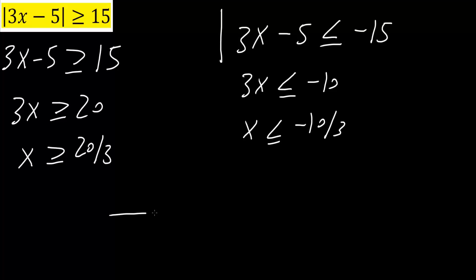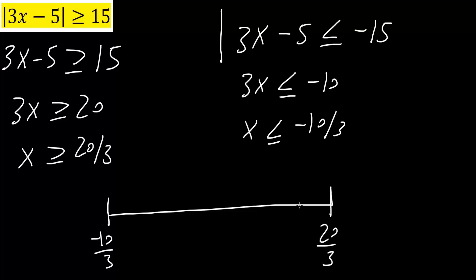On the number line, one point is negative 10 over 3 and the other is 20 over 3. We draw dotted lines at each. Since x is greater than or equal to 20 over 3, the arrow goes to the right. And since x is less than or equal to negative 10 over 3, the arrow goes to the left.